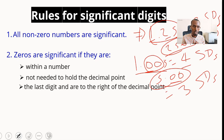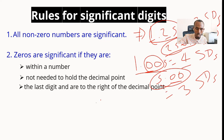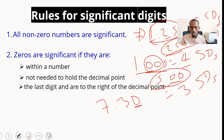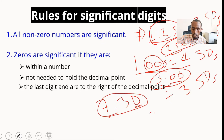Another case where zeros are significant is when they are the last digits and are to the right of the decimal point. For example, 7.30 — the zero is the last digit and is to the right of the decimal point, therefore it is significant, and this number has three significant digits in total.